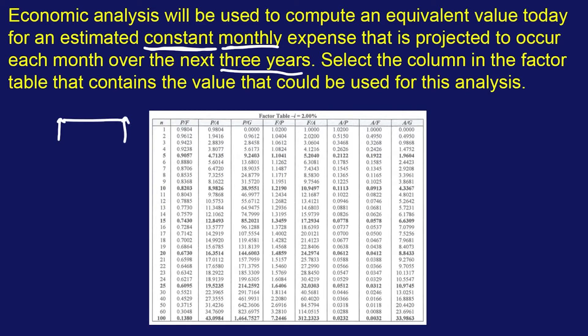So it's going to look something like this — month one all the way to 36. There's going to be a monthly cost for the next three years. And we're trying to find a present day value, find this P, where it goes in the opposite direction — we're paying money, so the arrows go that way. So we're trying to find the present value.